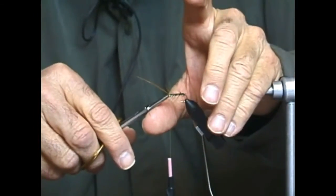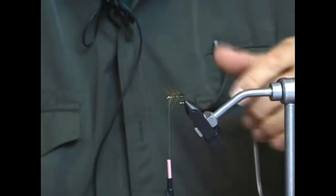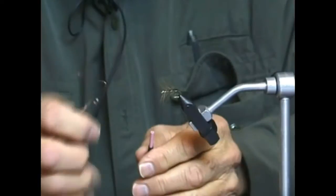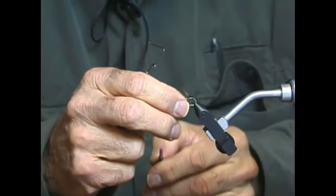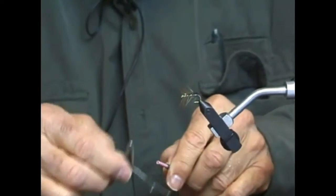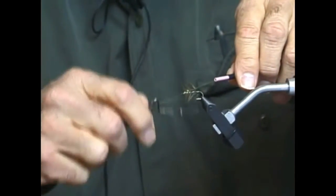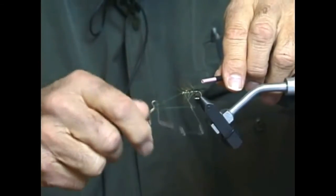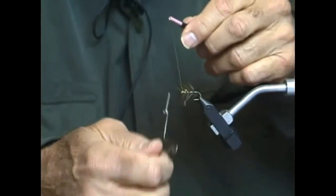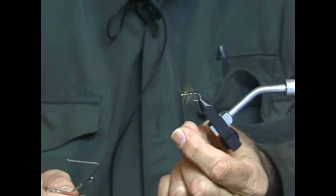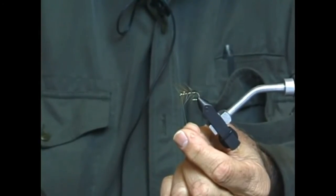To finish the fly we're going to cut away the waste saddle hackle, use our Mattarelli type whip finisher to finish the fly head, one, two, three, four, five, and our fly is finished and ready to fish.